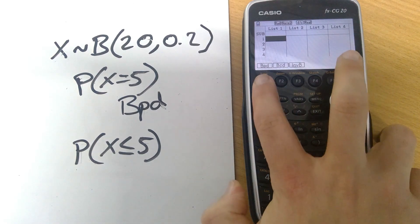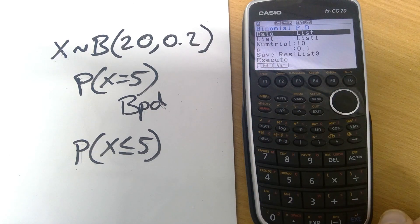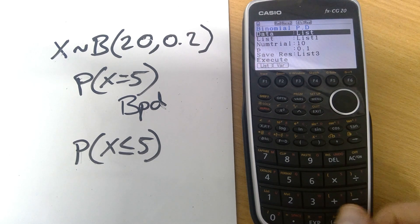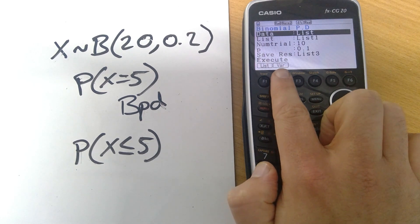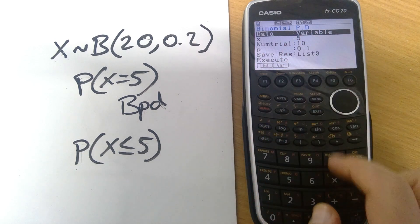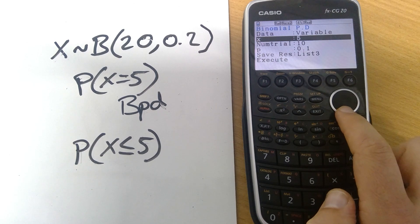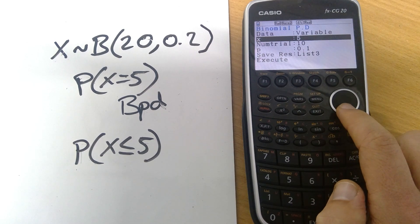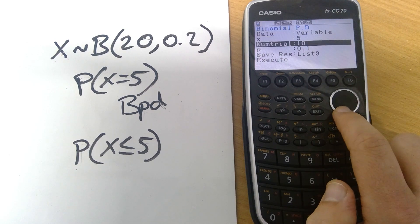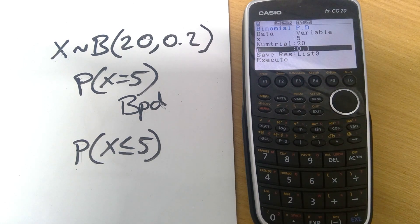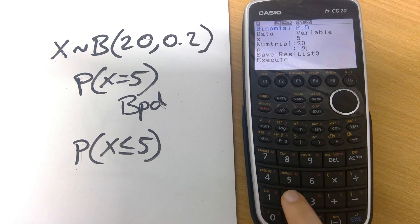Pressing F1 for that we are confronted with this particular set of choices. What we're going to do is work out just one specific value and we're going to look at a variable. Here is where I would enter the value of X. It's 5 in this case which was already on my calculator. Number of trials, we know that n is 20 so pressing 20 and our value of p is 0.2.